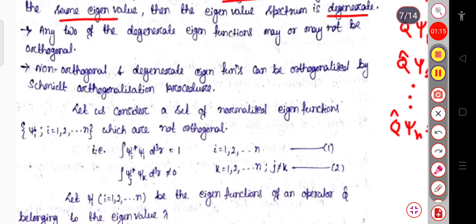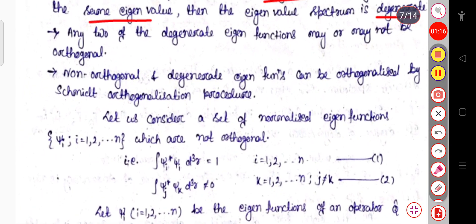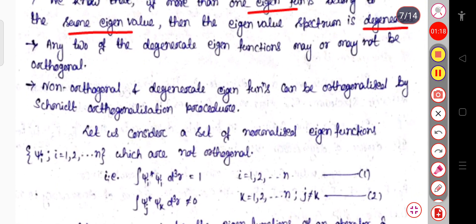Any two of the degenerate eigenfunctions may or may not be orthogonal. Non-orthogonal degenerate eigenfunctions can be orthogonalized by the Schmidt orthogonalization procedure. When there are two different degenerate eigenfunctions and they are not orthogonal, by using the Schmidt method we can orthogonalize them.